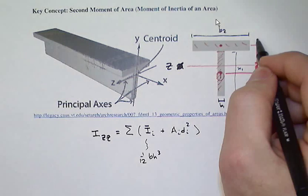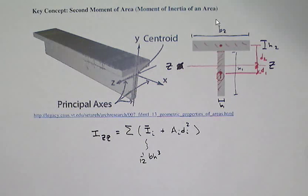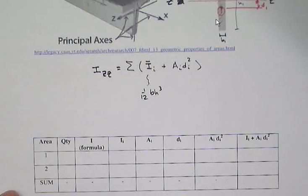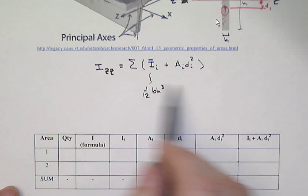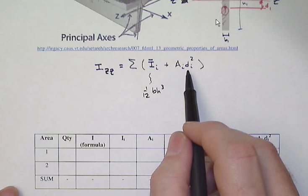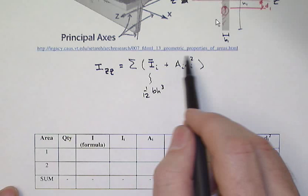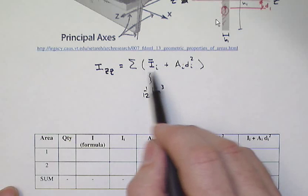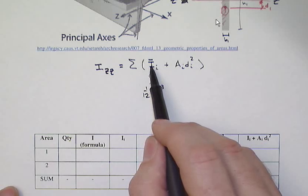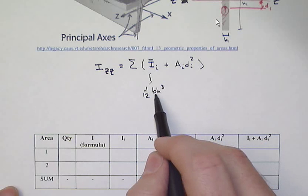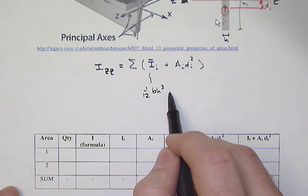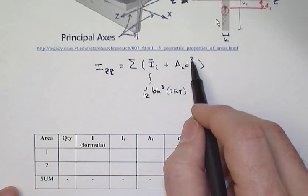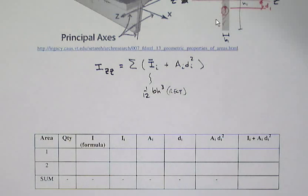You can set this up in a tabular kind of fashion and feed this through the parallel axis theorem. A lot of people are going to make mistakes because they'll either forget to do the Ad² term, or they'll pull the wrong formula for the particular composite or the individual pieces. (1/12)bh³ is just for a rectangle. Sometimes they also forget to square the d term as well.